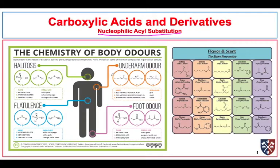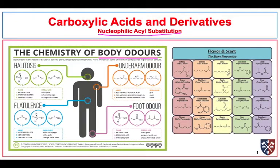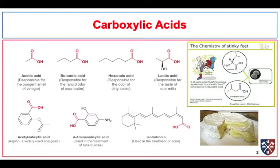Carboxylic acids are pretty interesting. They themselves often have stringent odors and are responsible for some of the smells that we find displeasing. Interestingly enough, all we have to do is make a derivative of carboxylic acids, add an alcohol group and convert it to an ester, and we get pleasant smelling things that are responsible for a lot of the smells we're used to in a good sense. We see carboxylic acids all over the place.